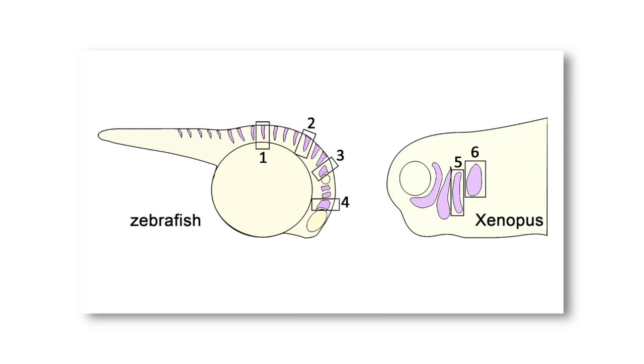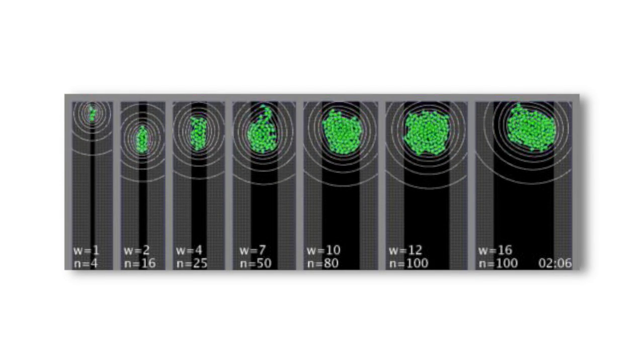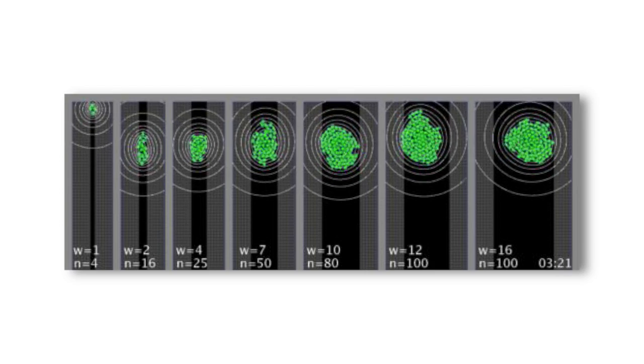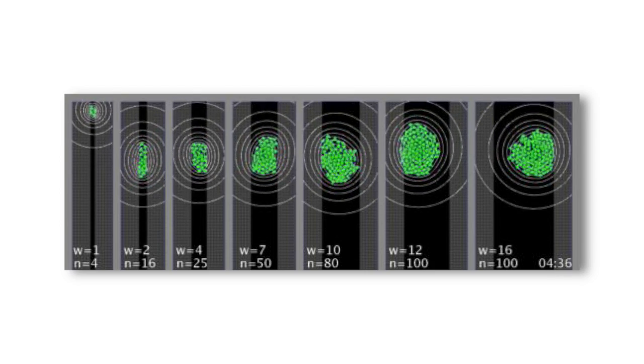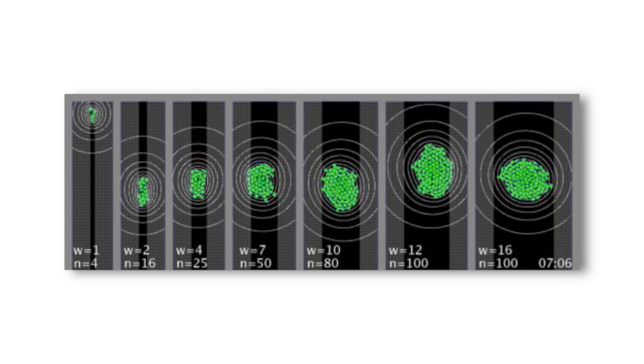Though the collective migration of neural crest cells is conserved across species, the width and size of the migratory streams varies tremendously. So in our model, we simulated different widths for different numbers of cells. And we found that there is an optimal number of cells for a given width.